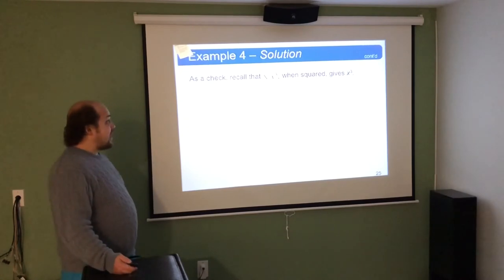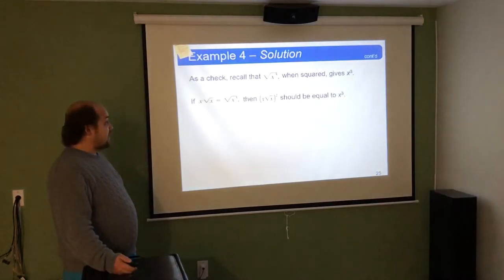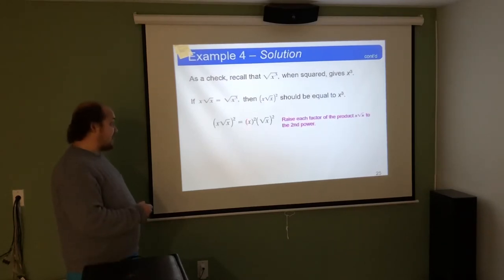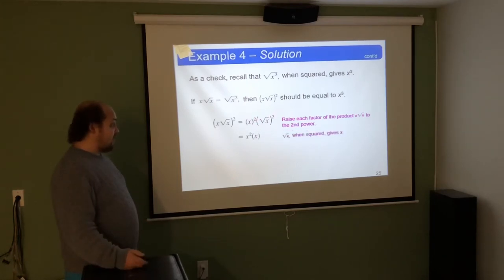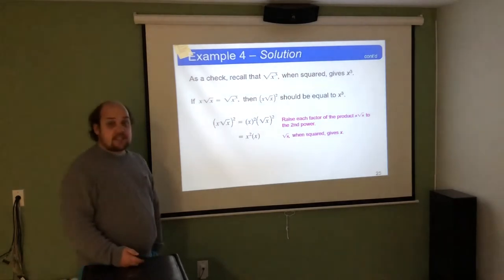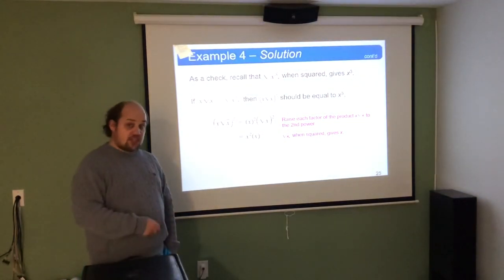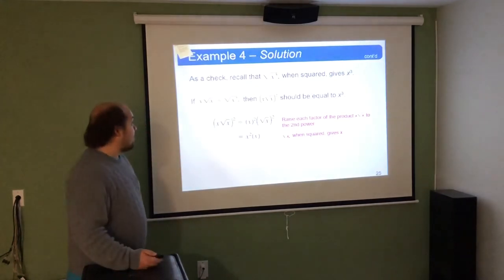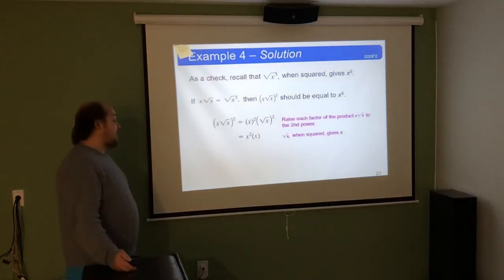As a check: if we square x root x, x squared is x squared, root x squared is x to the 1st, and x squared times x to the 1st gives x to the 3rd. This confirms that x root x is a valid simplification of the root of x cubed.